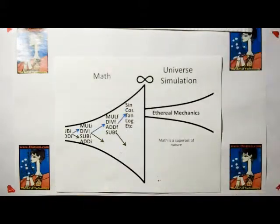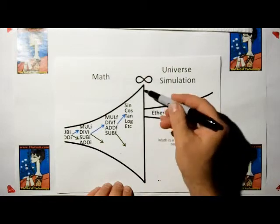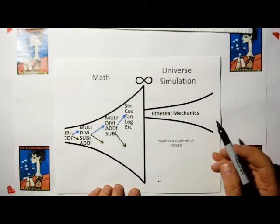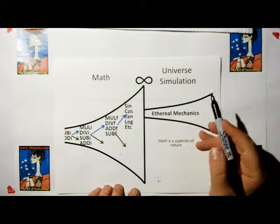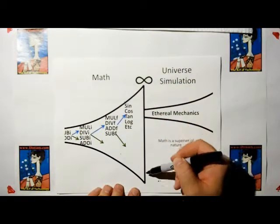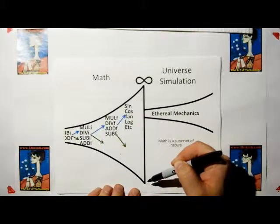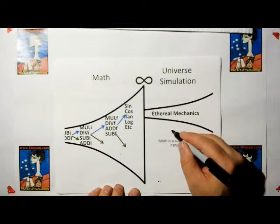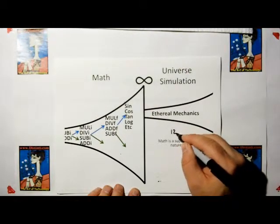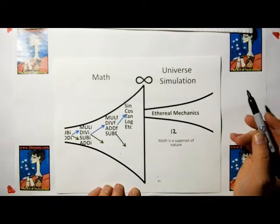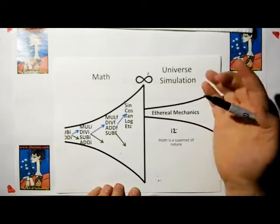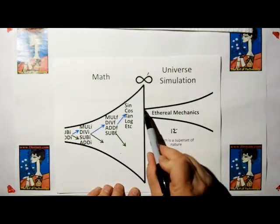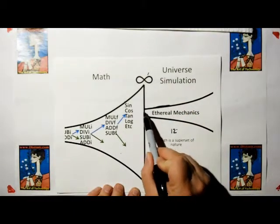You can use mathematics to then simulate something, let's say ethereal mechanics or universal simulation. Because the mathematics can define a universe that has infinite dimensions or even fractional dimensions, but scientists today say that our universe can be described in less than 12 dimensions or somewhere about there. That means if you have infinite dimensions, but you only need 12 to simulate the universe, then the universe is a subset of mathematics.